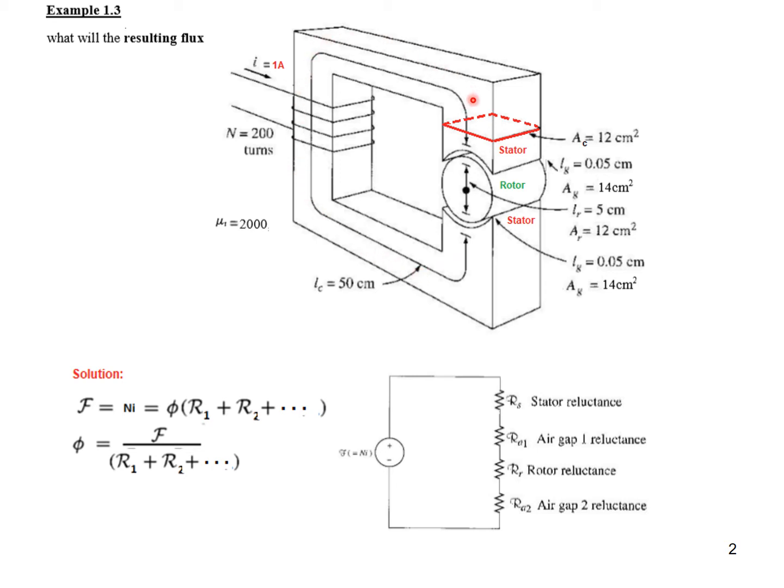So now if you look at the whole circuit, this is one parameter or reluctance, we represent it like Rs here. Then we'll have the air gap reluctance, then the rotor reluctance, and then the second air gap. So the equivalent electrical circuit may look like this.